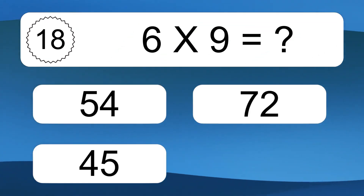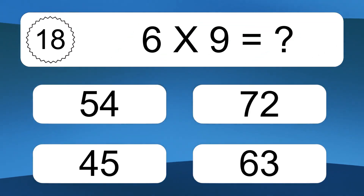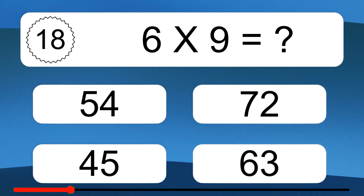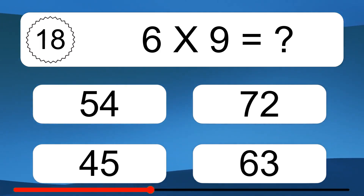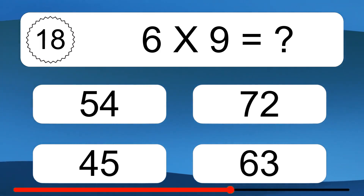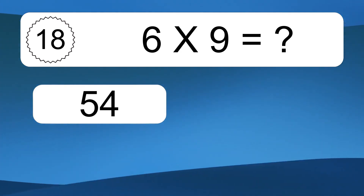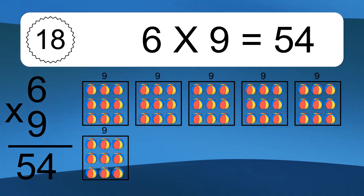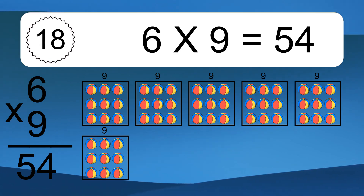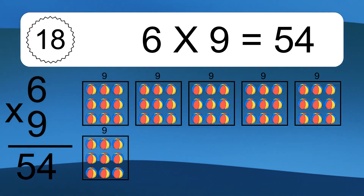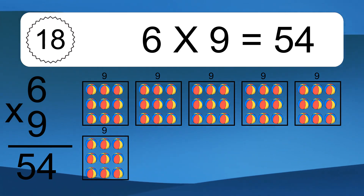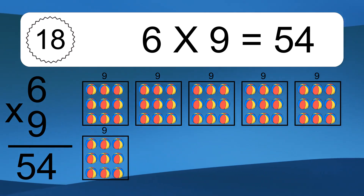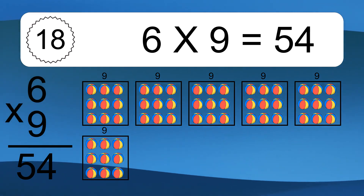6 times 9 equals what? 6 times 9 equals 54. We have 6 boxes, and each box has 9 colorful balls inside. If you count all the balls in all the boxes together, you will have 6 times 9 balls. This equals 54 balls.